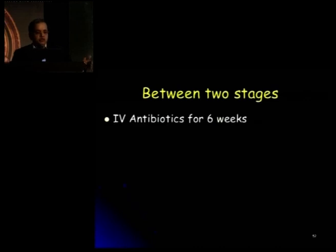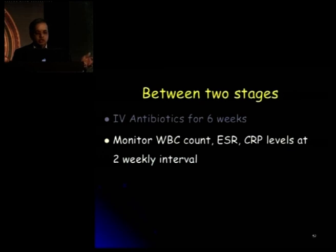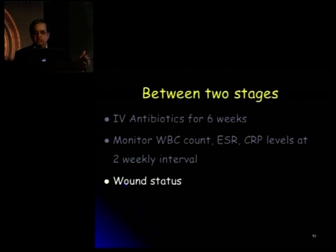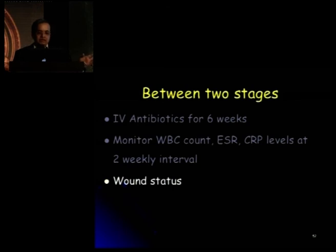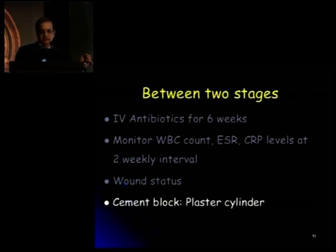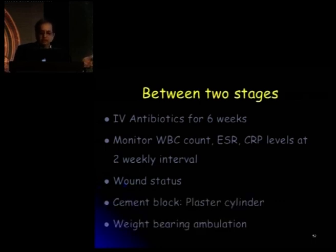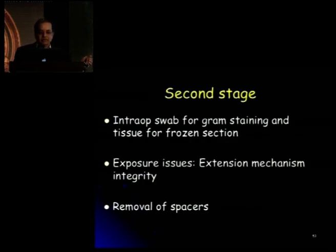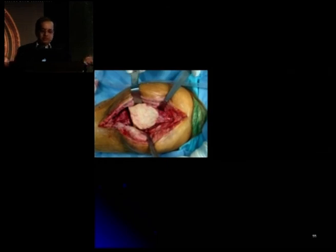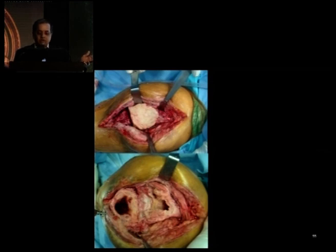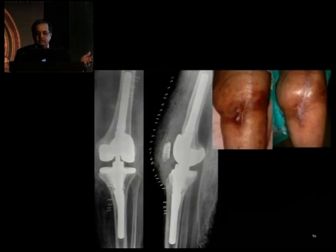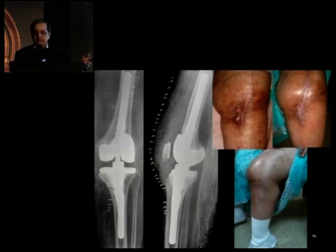Between the two stages, one needs to give IV antibiotics appropriate based on culture reports. Monitor WBC, CRP, and ESR at two-weekly intervals, and look at the wound status. At the end of six weeks, I prefer to give a two-week antibiotic-free interval to see if ESR and CRP levels are rising again. If they're not rising and the patient has remained quiescent, we can go ahead with the second stage. For the second stage, intraoperative swabs should be sent again. The removal of cement should not compromise any bone stock at all. Examples demonstrate six-month follow-up of such patients with good outcomes after reconstruction.